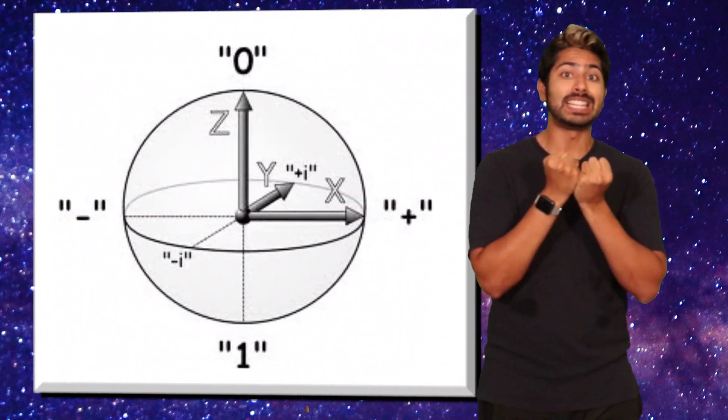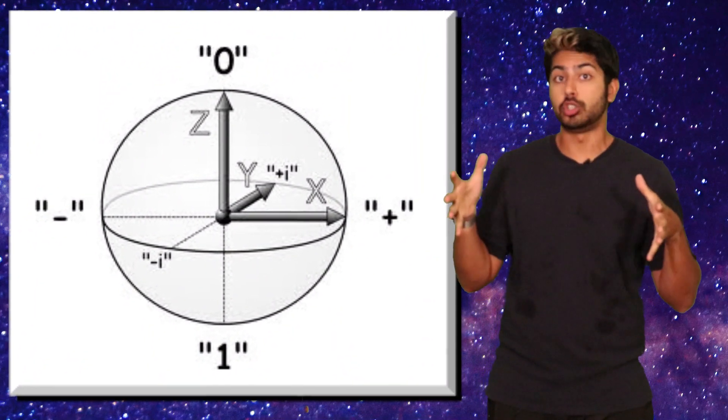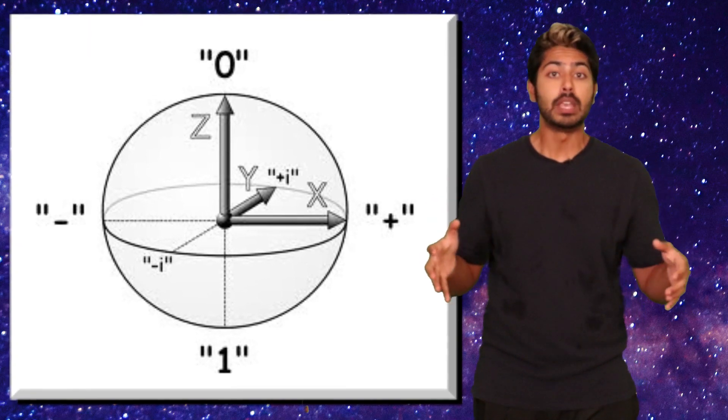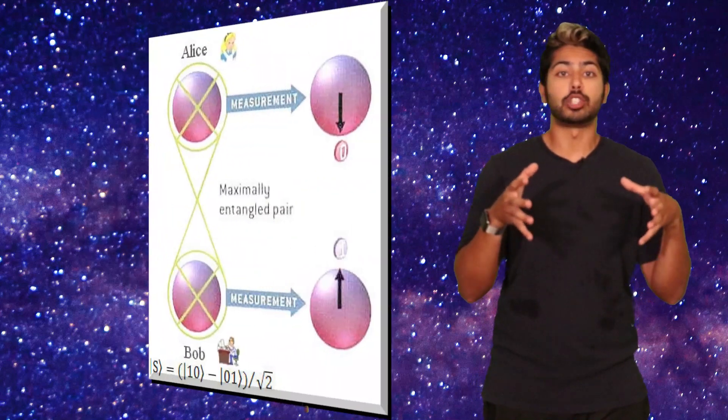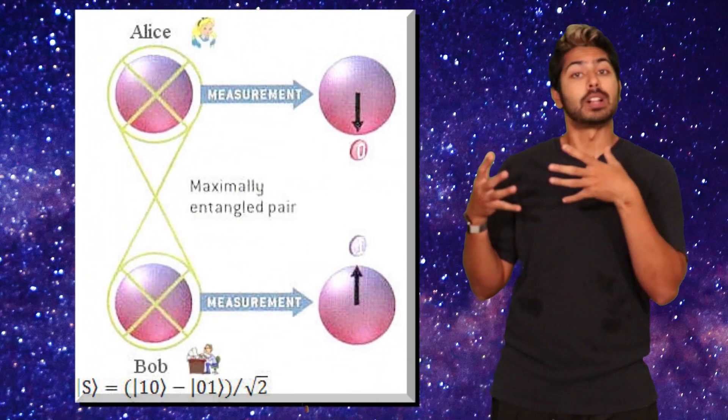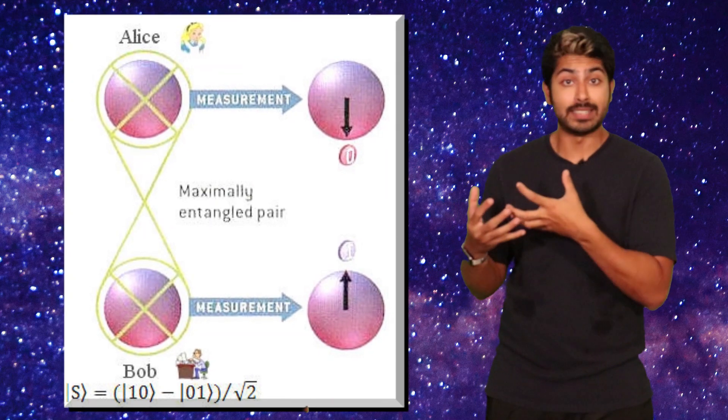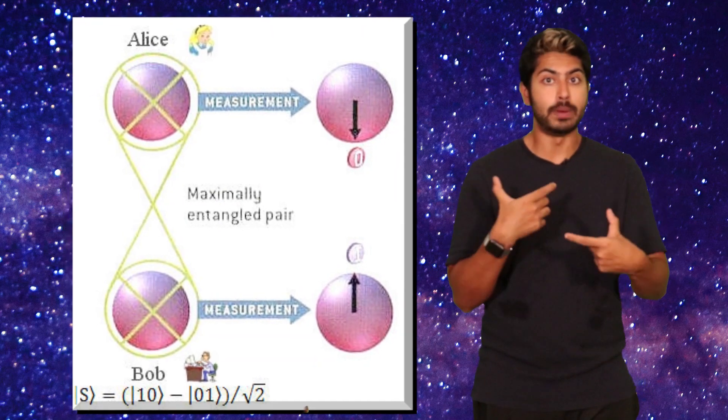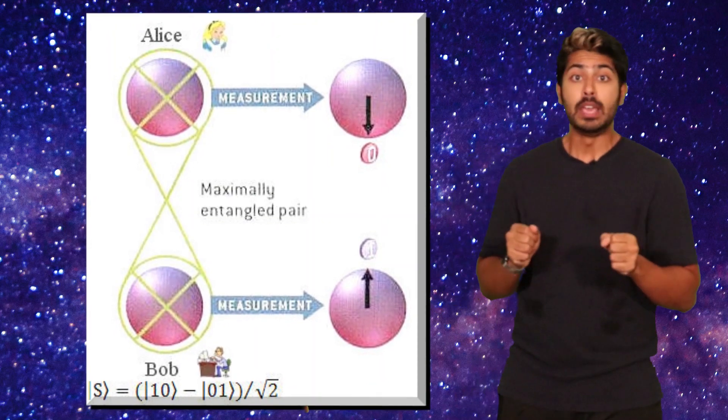These qubits can be physically represented by quantum particles that can occupy two states simultaneously. We could use a photon or an electron, and rather than having these qubits interact how classical bits do, we can leverage the idea of quantum entanglement to allow these qubits to interact with each other in all new interesting ways.